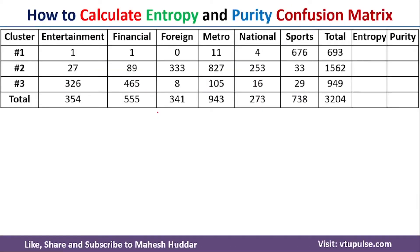In this case, we have been given a dataset with three clusters and six classes: Entertainment, Financial, Foreign, Metro, National, and Sports. Total is the total number of objects present in each cluster. Given this particular data, we need to calculate the entropy as well as purity.